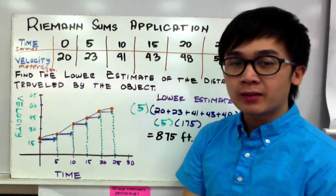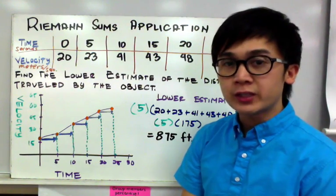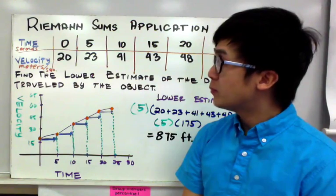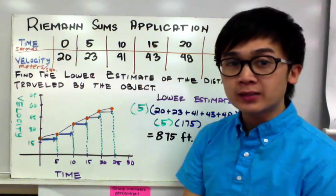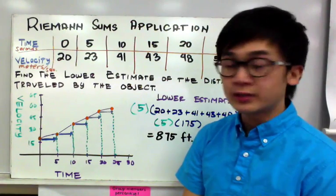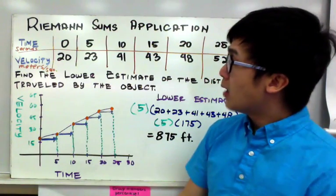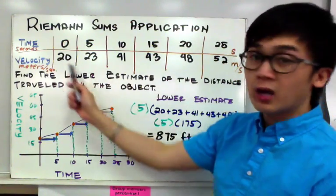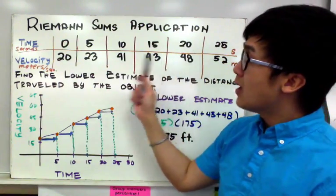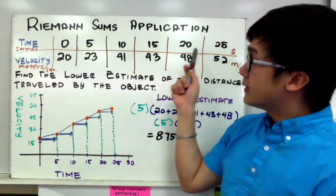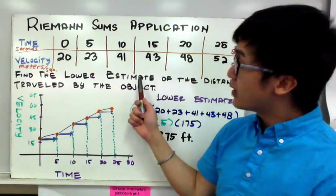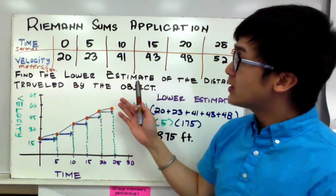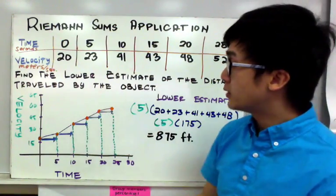We used Riemann Sums in approximating the area under the curve given a function. Today we're going to use the Riemann Sums method to measure the distance traveled by a moving object given the time in seconds and its velocity. In this particular problem, the object is traveling from 0 seconds up until 25 seconds, and we recorded the velocity of that object. We're going to use the lower estimate using Riemann Sums to estimate the distance traveled.